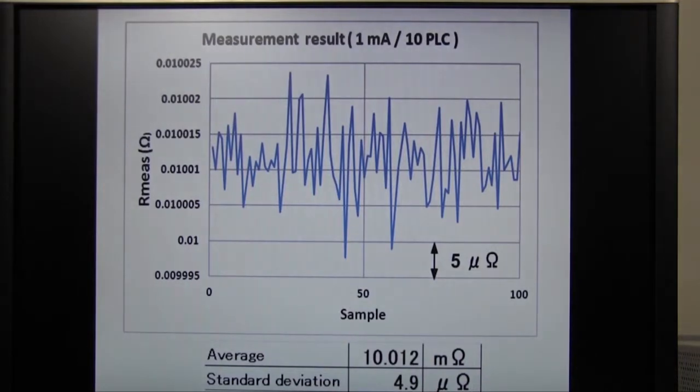Here's the measurement result. You can see that the measurement noise is about 5 microohms and less than 0.1% of measured resistance value. Even if the force current is small such as 1 milliamp, we can achieve a stable measurement.